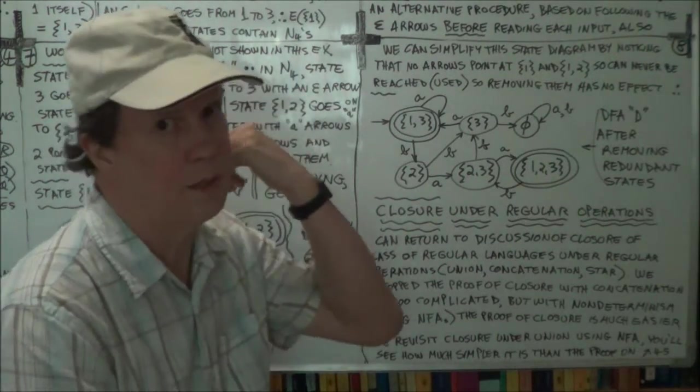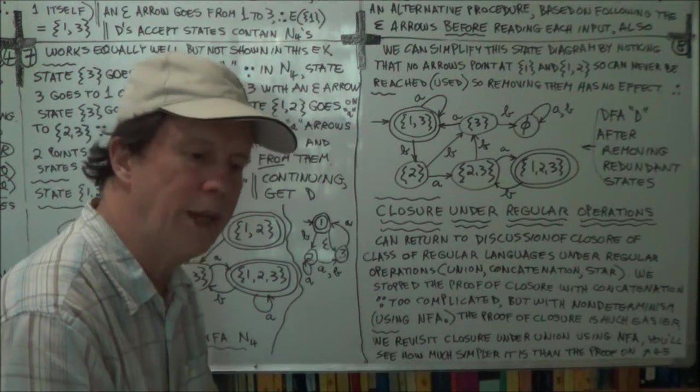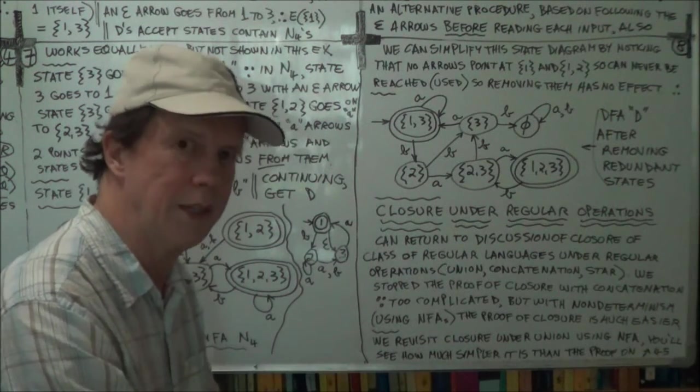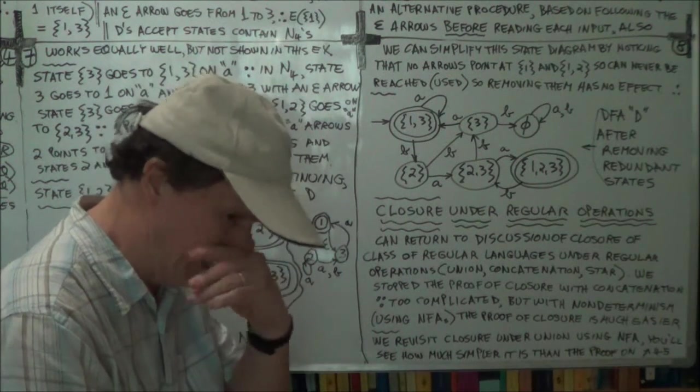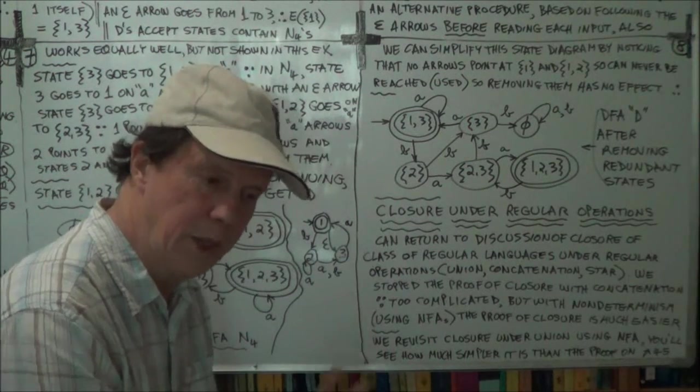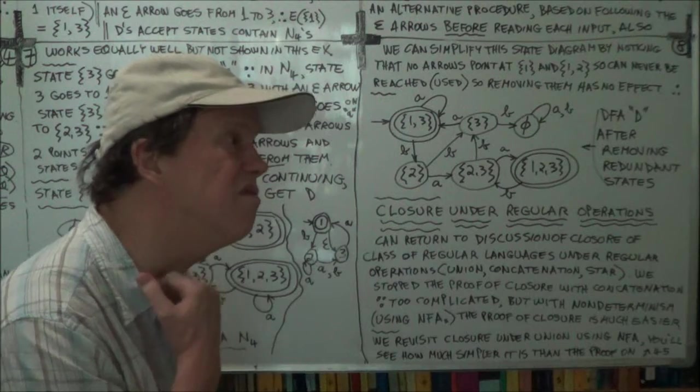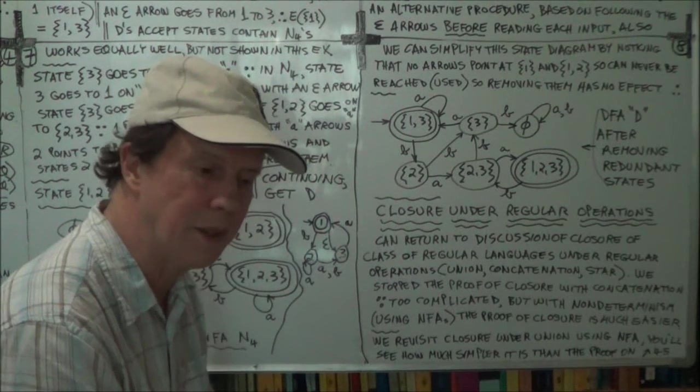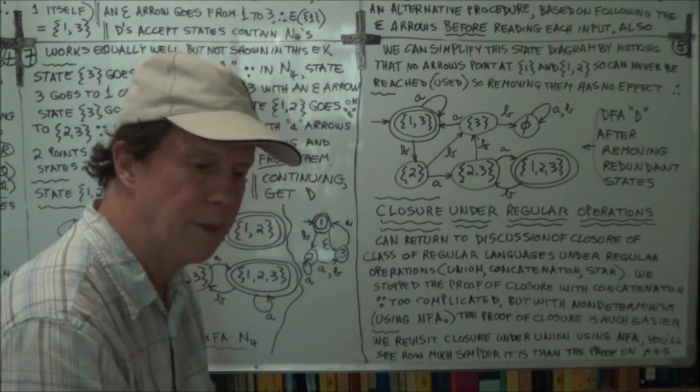Now, as I was saying in the first session of this board, before we do that, we'll go back to our proof that we actually did for showing that the regular languages are closed under union. And we did have a successful proof for that before, using the Cartesian product, I think. Yeah, we used the states.